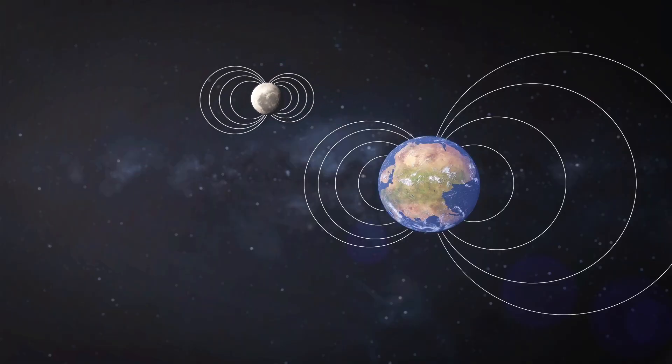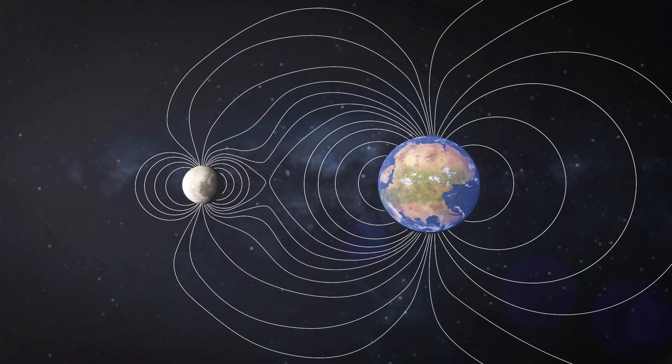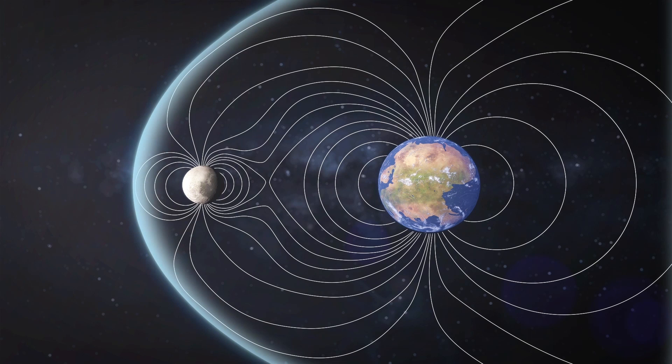The theory states that the magnetic fields of the moon and Earth could have combined to create a more protective magnetosphere around the Earth. In this way, the Earth's surface could have been protected enough to make evolution possible.